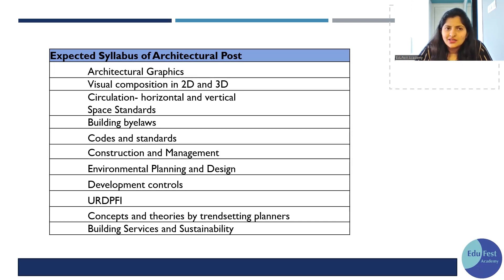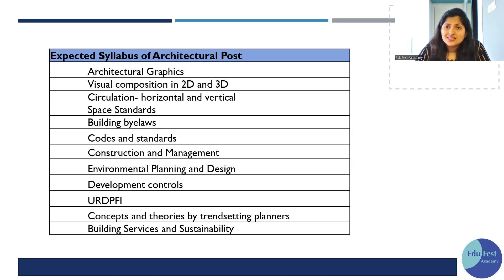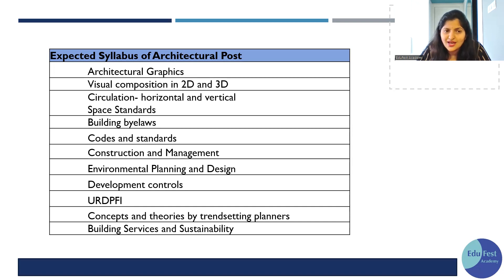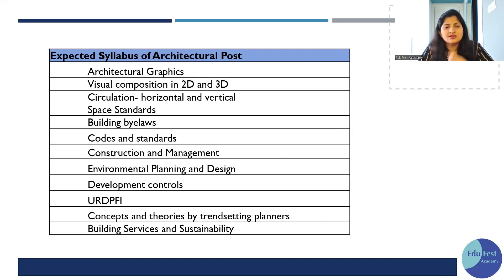Key topics include: architectural graphics, circulations — both horizontal and vertical — and space standards, for which there are specific rules. Construction management is also important, covering CPM (Critical Path Method) and PERT, including understanding networks and the differences between these approaches.